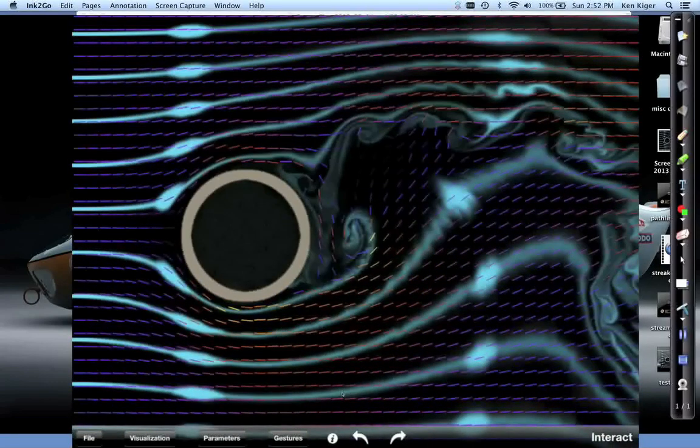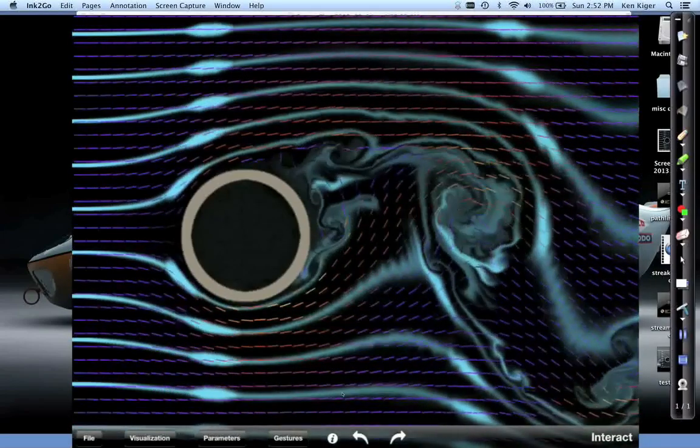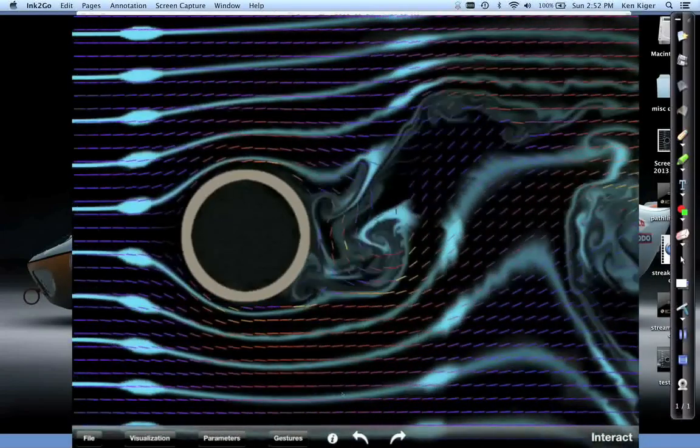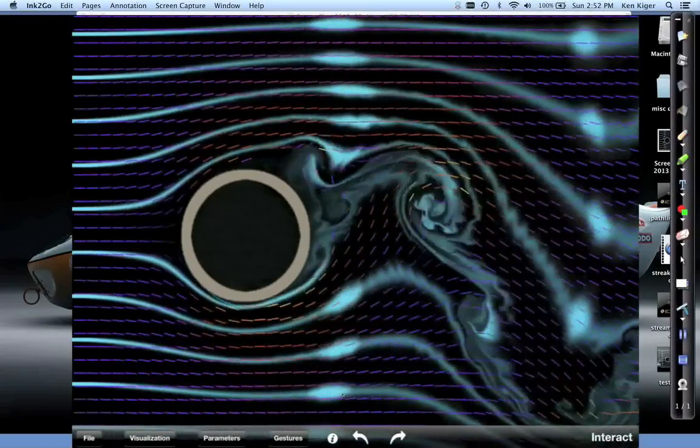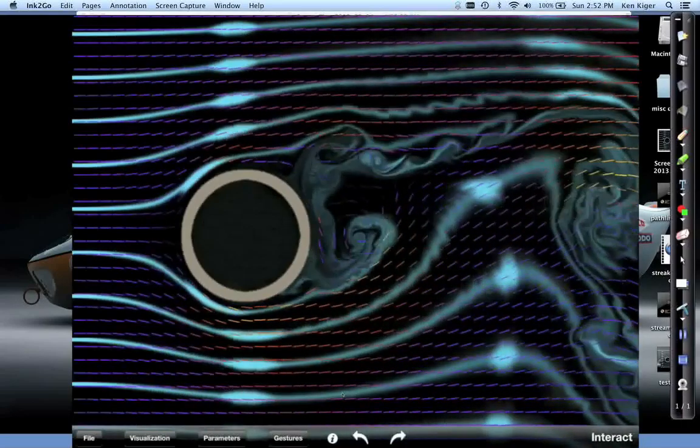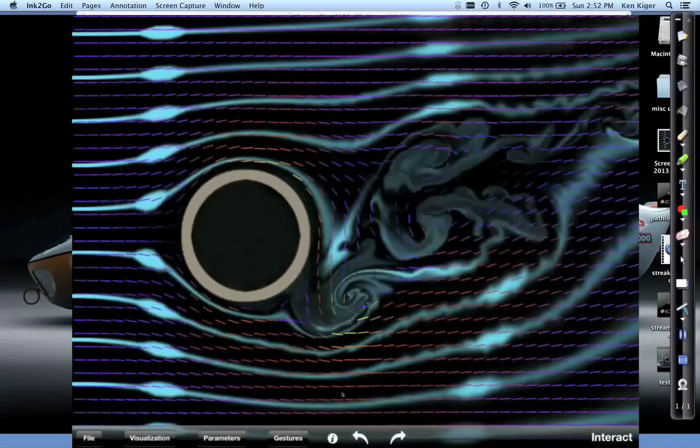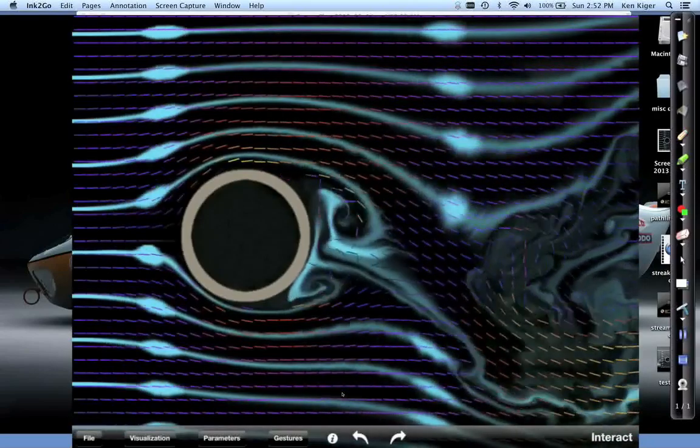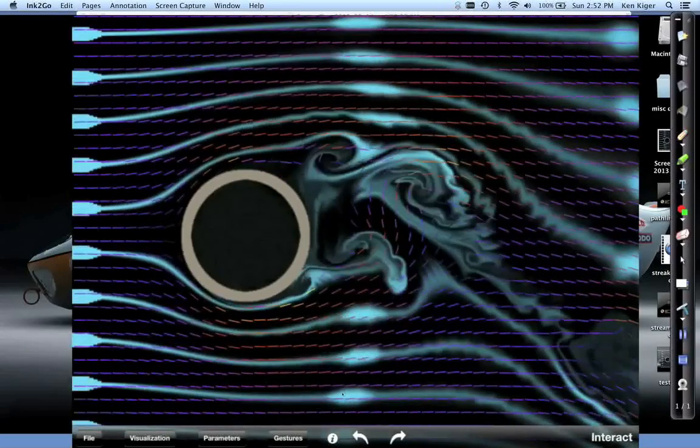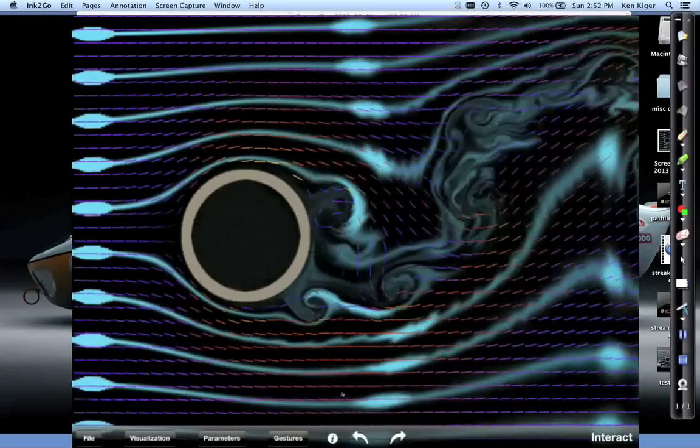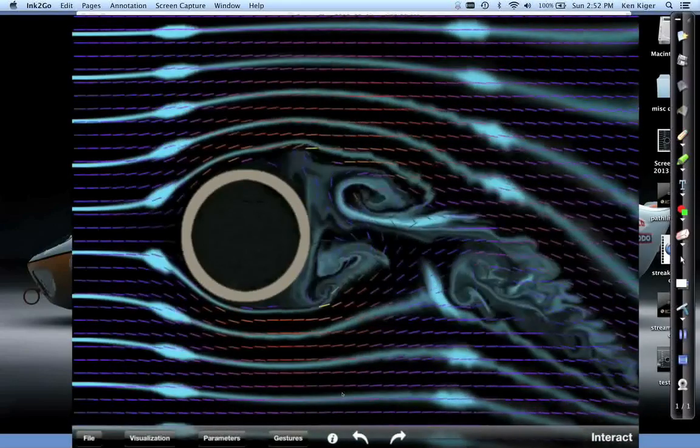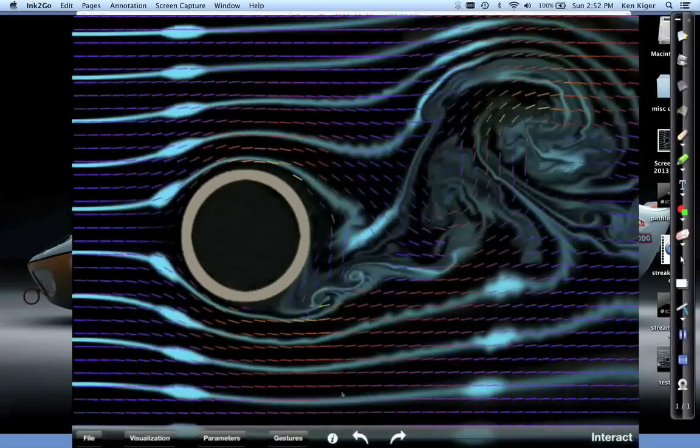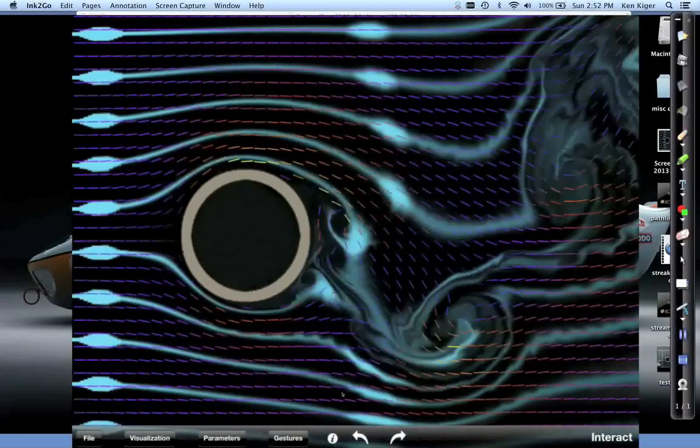Streak lines are most useful in experiments because they're easy to generate in physical conditions like wind tunnels. As we've illustrated and we'll also discuss at the end, streak lines, streamlines, and pathlines all look the same if you have a steady flow. In this particular case, part of the flow is steady upstream of the cylinder and the flow downstream is unsteady, so we'll be able to see this clearly at the end.